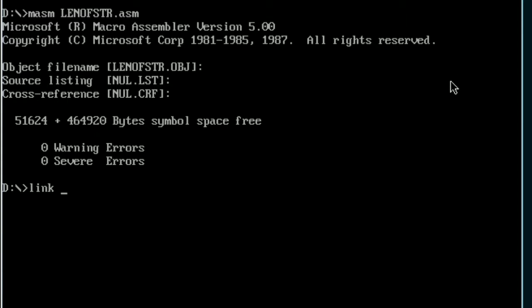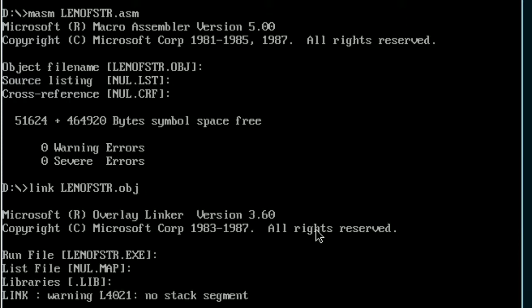Link the program. Why we need to link the program is, whatever the object file we got here, len of str.obj. Enter four times. So we got exe file you can see here, len of str.exe. Now debug this exe file.